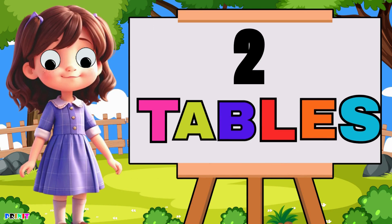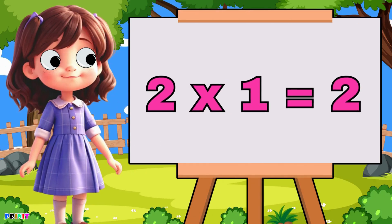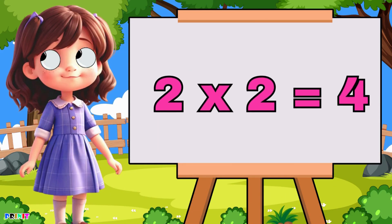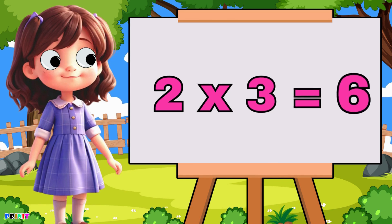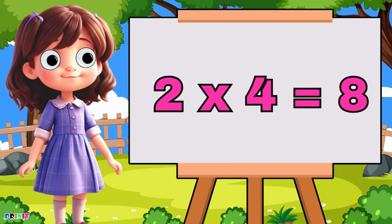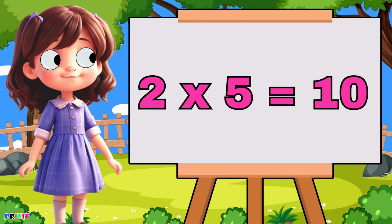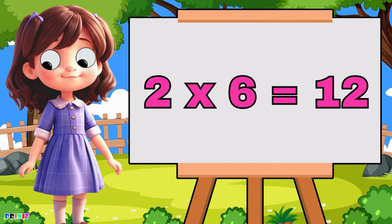Two tables. Two ones are two, two twos are four, two threes are six, two fours are eight, two fives are ten, two six are twelve.